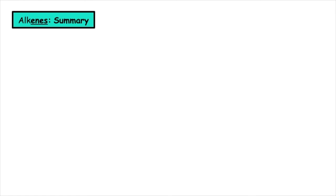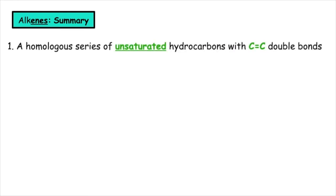To summarize everything we need to know from the SQA core spec on alkenes: firstly, they are a homologous series of unsaturated hydrocarbons with carbon to carbon double bonds. They have the general formula CnH2n.